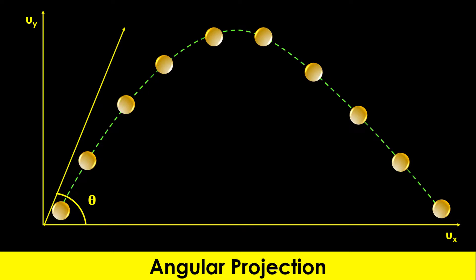Therefore, its velocity u is always resolved into two components: the horizontal component u cos theta and the vertical component u sin theta. We will learn more about angular projection in the third part of this series, and endeavor to keep a date.